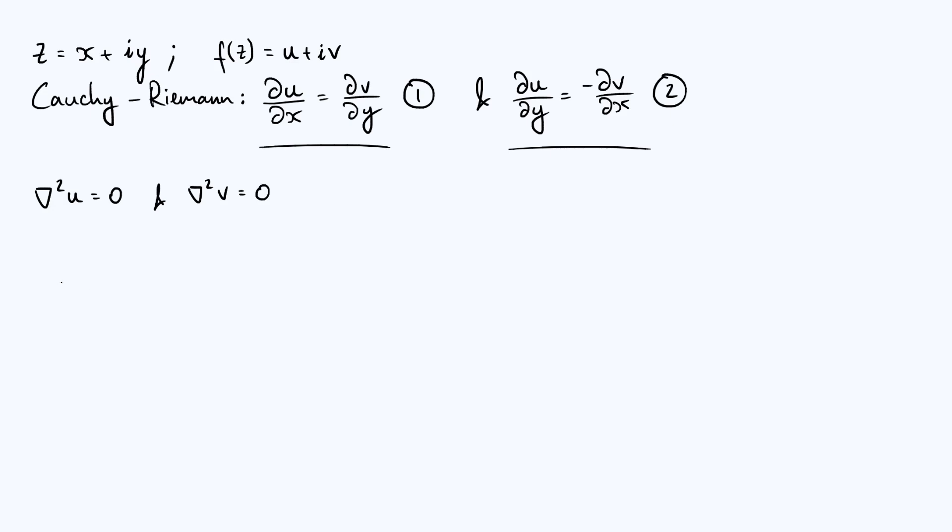Now, the second property that we're going to talk about concerns lines of constant u and lines of constant v in the complex plane, the xy plane. So what we're going to do is consider a particular line which has the implicit equation u, which I'm going to write out explicitly as a function of x and y, is some constant. So this equation here, u equals k, where k is a constant, defines a line in the complex plane. So if you consider moving along that line, well, for obvious reasons, you can say that du is zero.